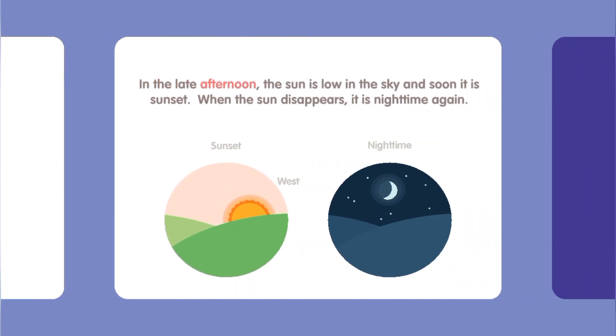In the late afternoon, the Sun is low in the sky and soon it is sunset. When the Sun disappears, it is nighttime again.